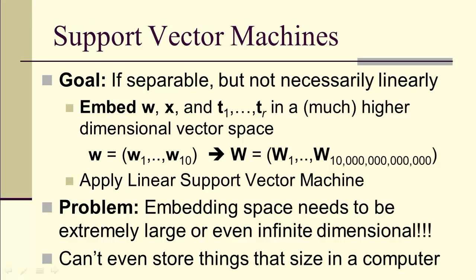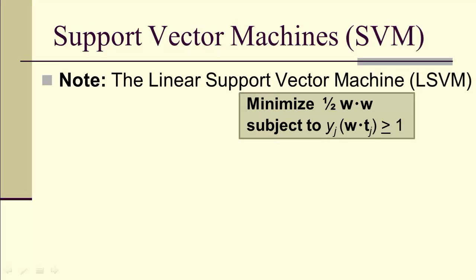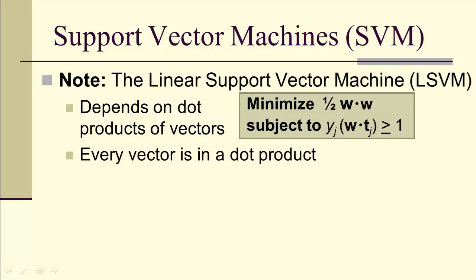What we're going to see is that the embedding space to actually pull this off tends to be very, very large, or even infinite dimensional. You can't store things that size in a computer, so explicitly doing this embedding is pretty much impossible. But again, there's a trick. Notice this entire problem depends only on the dot product of vectors. Every vector that occurs inside the problem is actually also inside a dot product.